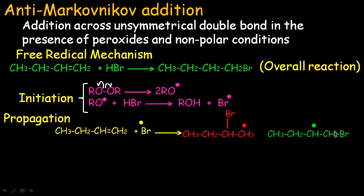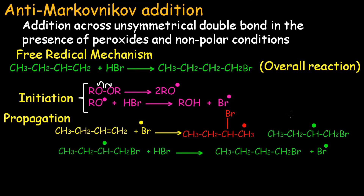In other words, the negative part of the attacking reagent goes to the carbon with the higher number of hydrogens or with less substitution. The carbon with less substitution will be favored in anti-Markovnikov addition, and the more substituted product will not form. The bromine free radical adds onto the less substituted carbon, and this free radical then attacks HBr again, taking a hydrogen from it and regenerating bromine free radicals, which cause homolytic cleavage of further olefinic bonds — and the process continues.